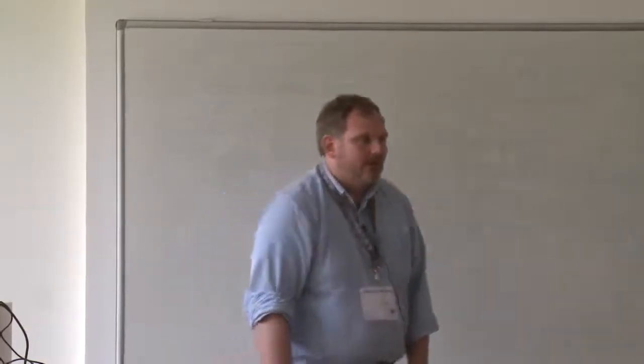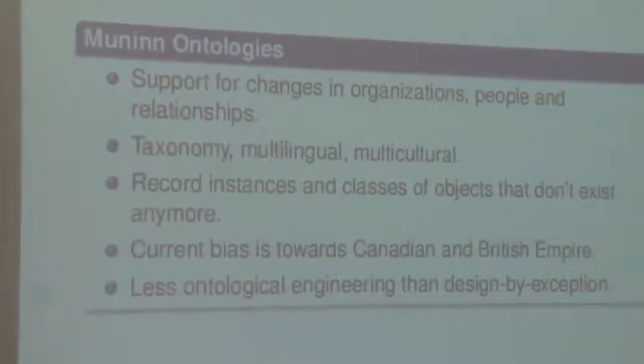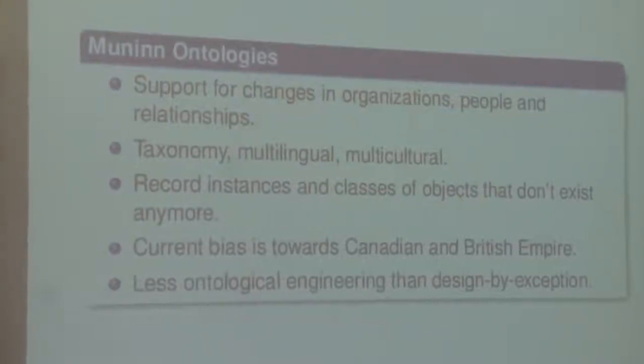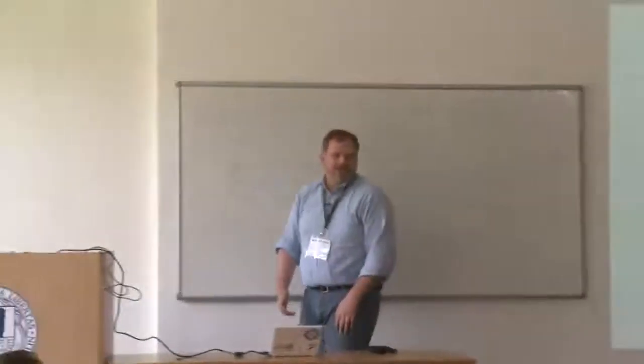In this talk, the speaker will motivate what they're doing and how it relates to Wikipedia. The core problem of the First World War is that it happened 100 years ago — it's historical data. The people, events, countries, and organizations are no longer current. Many existing ontologies are meant to deal with present, current facts, and it's a real problem to talk about facts or events that happened in the past because they're no longer current or true.